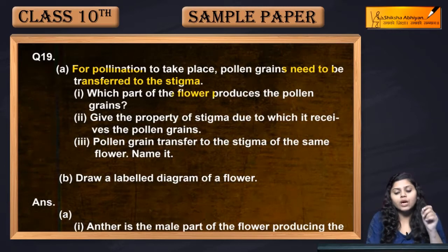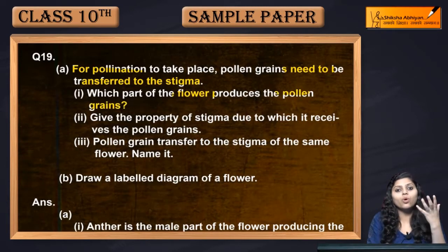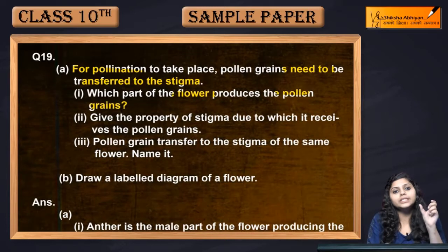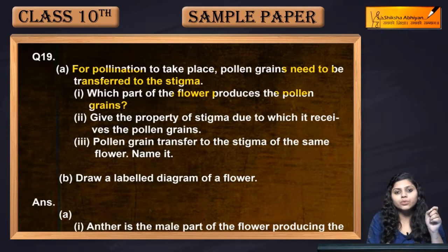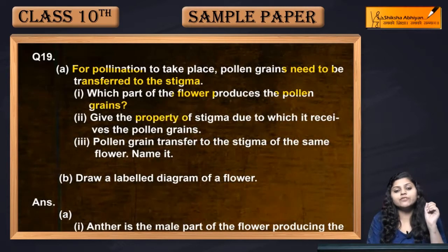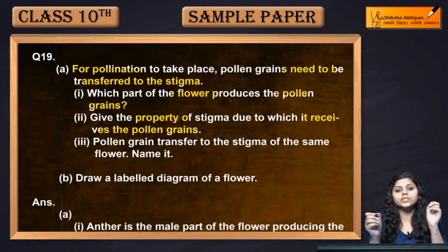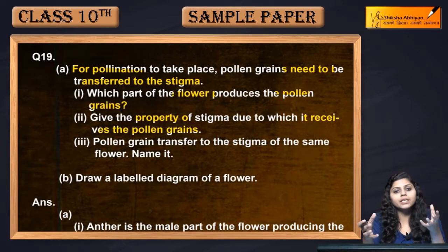Which part of the flower produces the pollen grain? Konsa flower ka part pollen grains produce karta hai? The male part — anther — produces pollen grains. Give the property of stigma due to which it receives the pollen grain. Kya property hai stigma ki joh pollen grains ko receive karti hai?